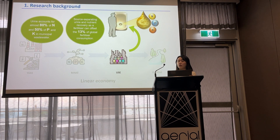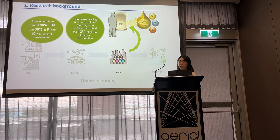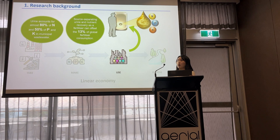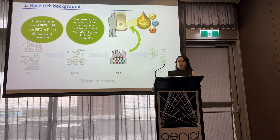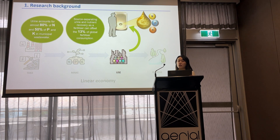Given this situation, our urine is like a liquid gold because it's rich in essential nutrients for plants: nitrogen, phosphorus, and potassium. Although urine accounts for only one volume percent in wastewater, it accounts for 80% of nitrogen and 50% of phosphorus and potassium in municipal wastewater. As mentioned by Jitschang, source-separating urine and nutrient recovery as a fertilizer can offset 13% of global fertilizer consumption.